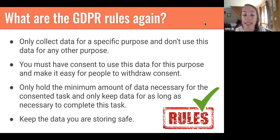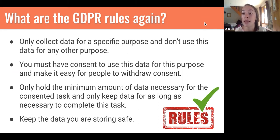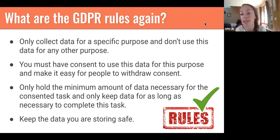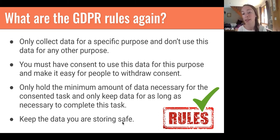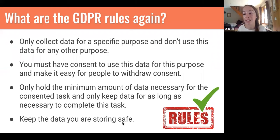You should only hold the minimum amount of data necessary for the consented task, and only keep it for as long as necessary. If you just want to send people an order cycle reminder and a newsletter, you won't really need any more data than their name and email address. Don't collect any more data than you need to fulfill the function you need to fulfill — for example, you wouldn't need to ask for someone's gender. The final point is to make sure you're keeping the data safe, and Mailchimp can make that easier because your audience data benefits from Mailchimp's security.